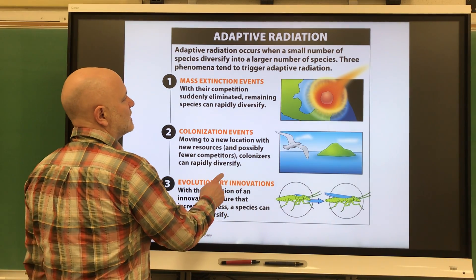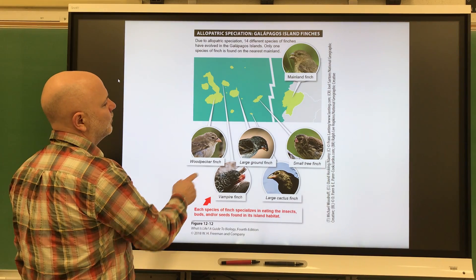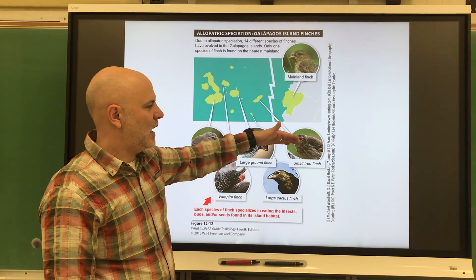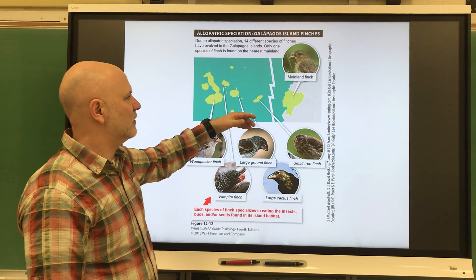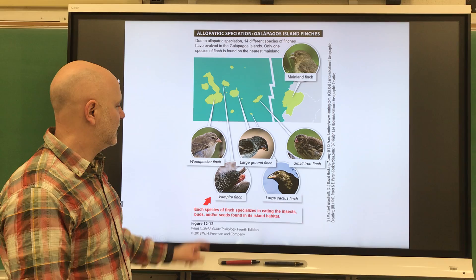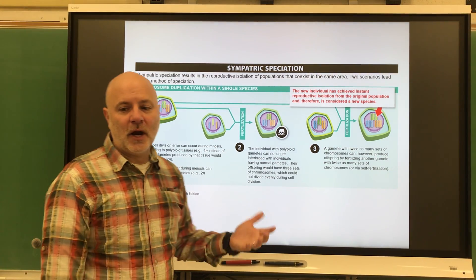That's looking at allopatric speciation - separations. This is what we see on the Galapagos Islands with all the Galapagos finches there, Darwin's finches, diversified from those mainland finches.